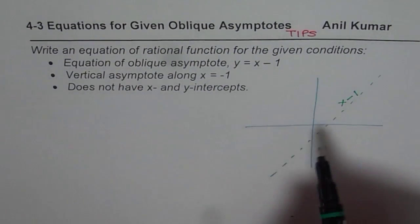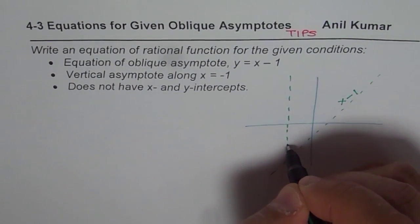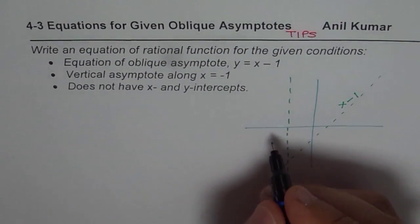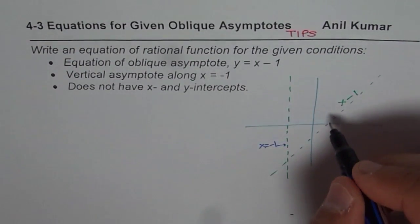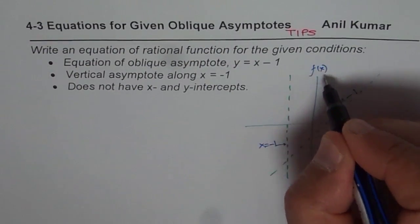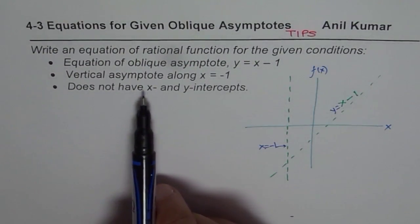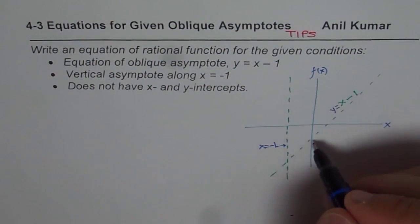It has vertical asymptote x = -1, that means kind of like this. So this is the vertical asymptote, which is x = -1 and this is y = x - 1. We need to write a function which satisfies these conditions along with it does not have x and y intercepts.